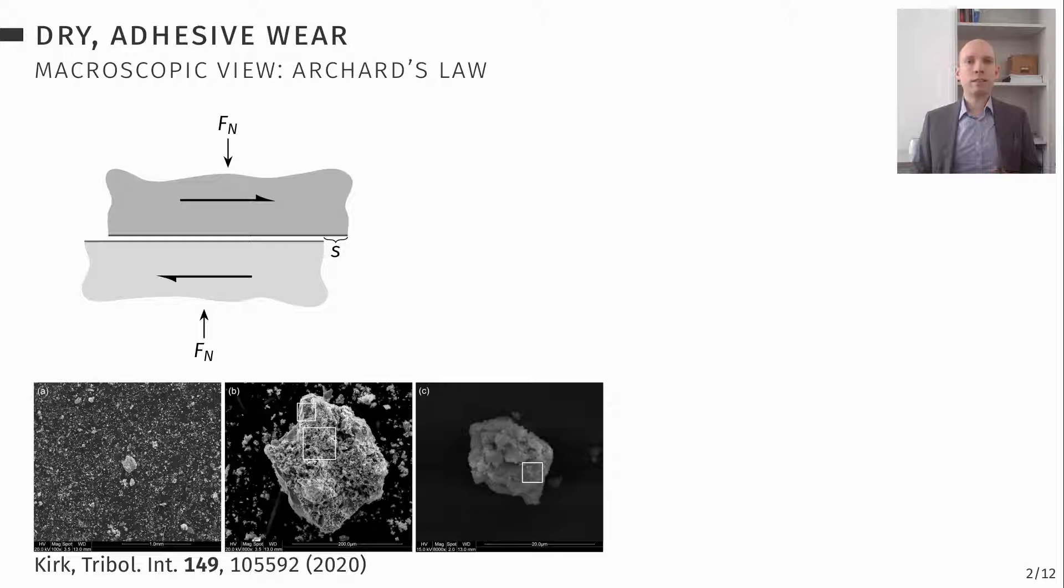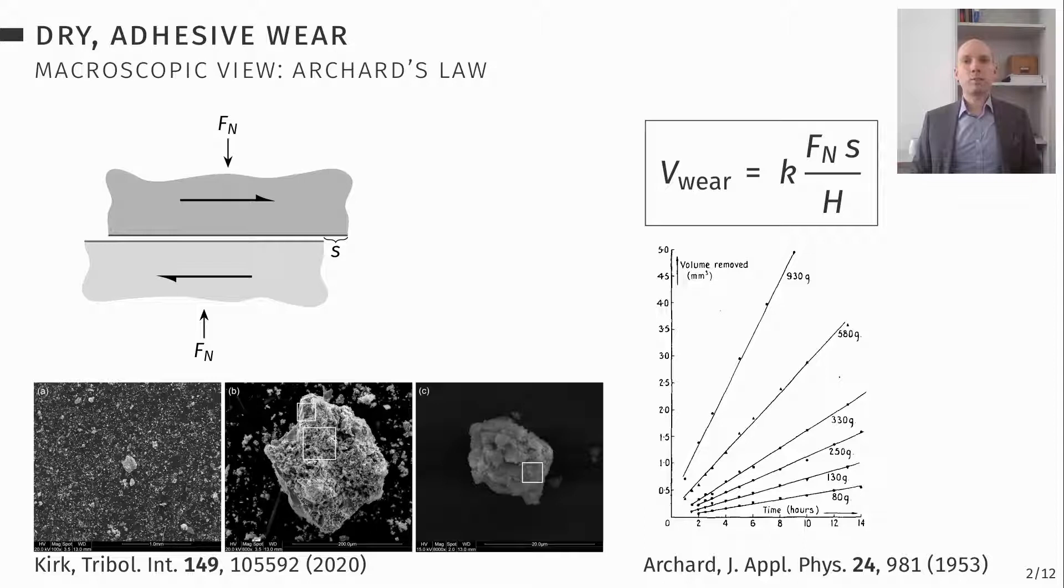You can see here an example from some experiment, but they are all over the literature. Since the last century and before, it is known that wear is a quite linear process, linear to the sliding distance and to the normal load Fn, inversely proportional to the hardness in many wear laws, for example here Archard's wear law. But then you're always missing something. You have a parameter, for example here this K, which is a proportionality constant, the wear coefficient.